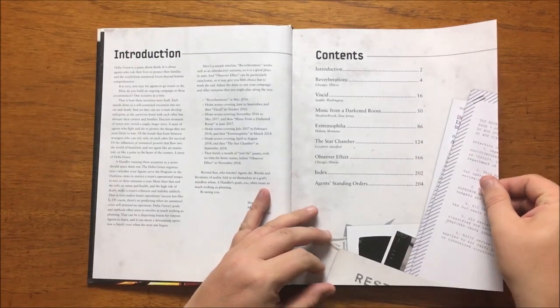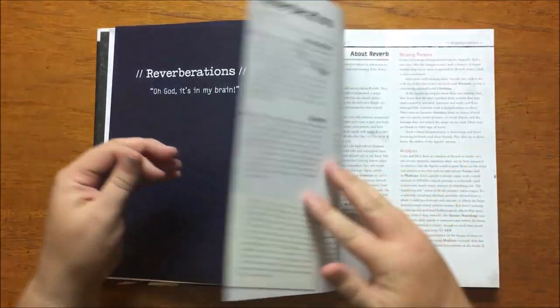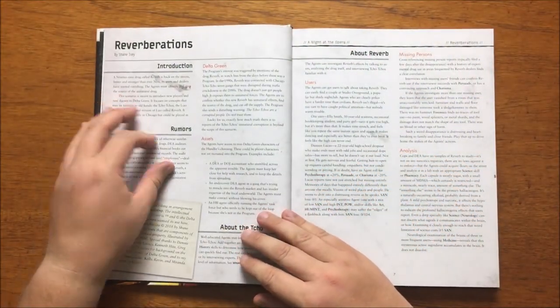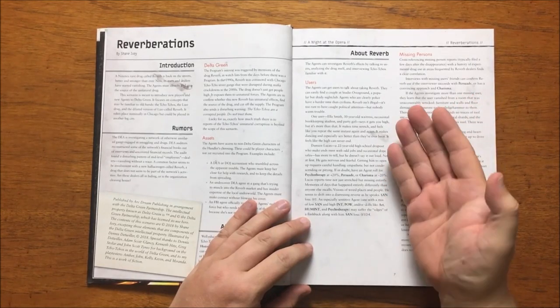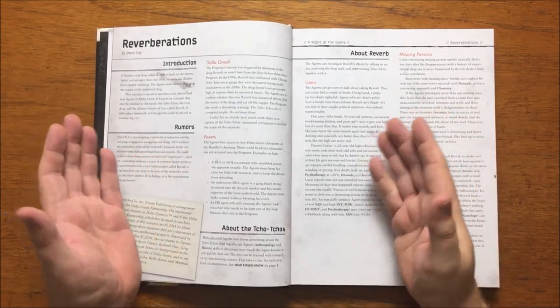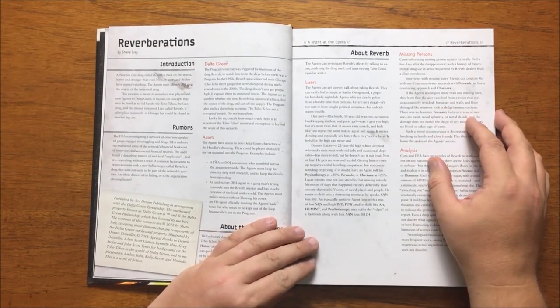We then move on to the first, Reverberations. Reverberations has been designed as a scenario to introduce players to the bleak world of Delta Green. It begins by telling us about a 90s rave drug called Reverb that is currently back on the streets and its users and dealers have been mysteriously vanishing. The agents have the task of identifying and stopping the source of the drug.